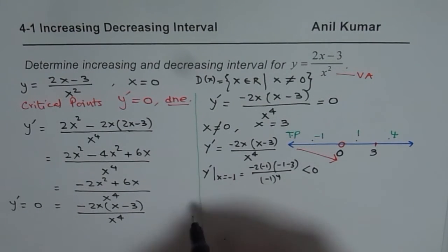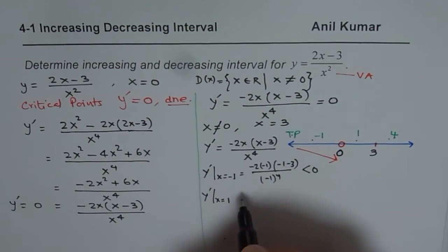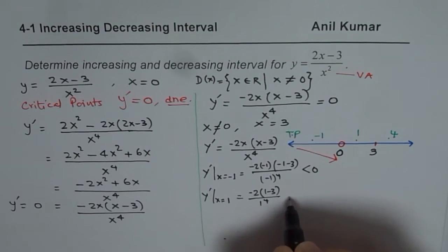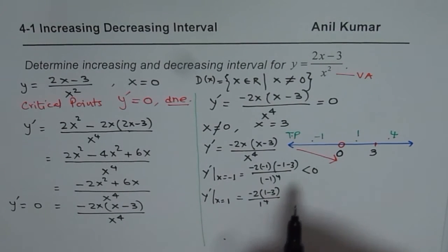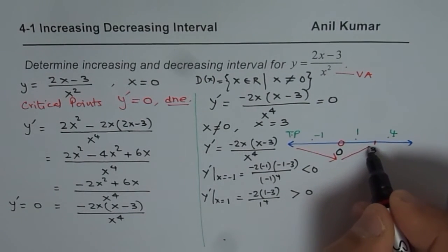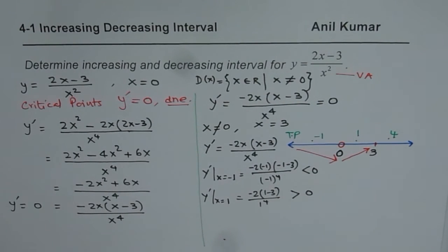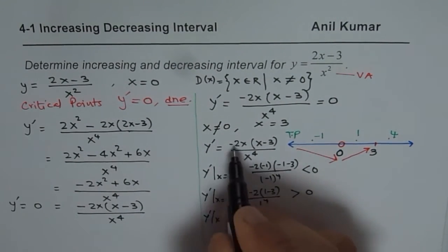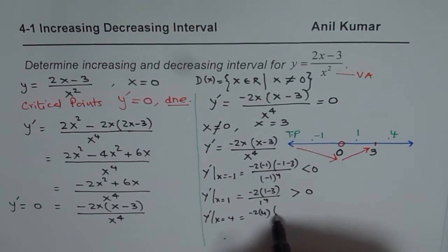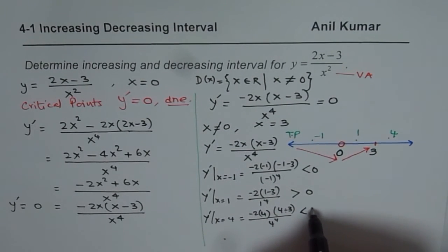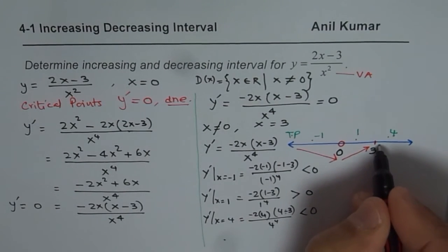At x equals 1: y prime gives negative 2 times (1 minus 3) over 1 to the power of 4. Negative times negative makes the numerator positive, so the derivative is greater than 0 — the function is increasing. At x equals 4: we get minus 2 times 4, which is negative, times (4 minus 3), which is positive, over a positive denominator — giving a negative value. So the function is decreasing in this interval.